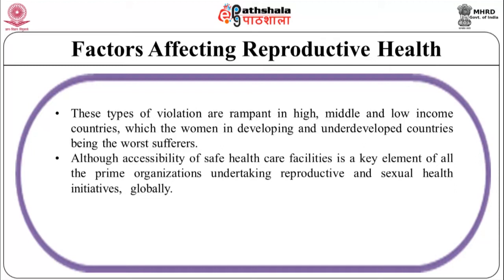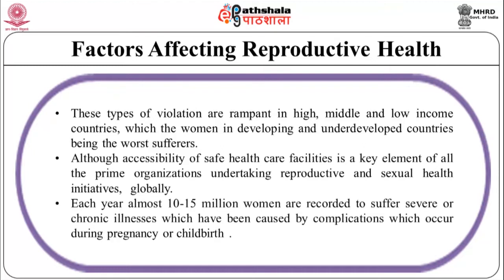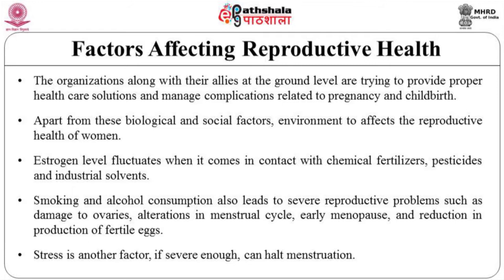Although accessibility of safe health care facilities is a key element of all the prime organizations undertaking reproductive health and sexual health initiatives globally, each year almost 10 to 15 million women are recorded to suffer severe or chronic illnesses caused by complications which occur during pregnancy or childbirth. The organizations along with their allies at the ground level are trying to provide proper health care solutions and manage complications related to pregnancy and childbirth. Apart from these biological and social factors, environment also affects the reproductive health of women — estrogen levels fluctuate when they come in contact with chemical fertilizers, pesticides and industrial solvents.